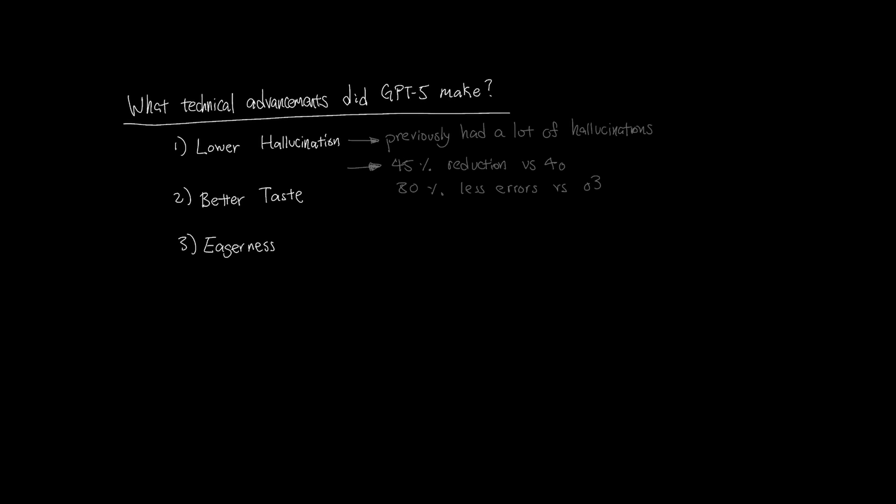Another underlooked metric is taste, especially when it comes to front-end applications. I typically use V0, Lovable, and Bolt for most front-end bootstrapping, but GPT-5 definitely showed comparable if not better taste when it comes to front-end design, which isn't something that we can easily measure in a metric, but certainly a worthwhile advancement in its soft skills.